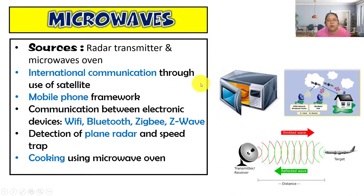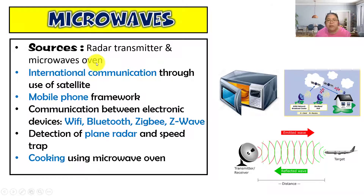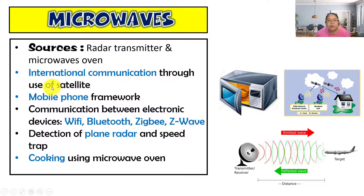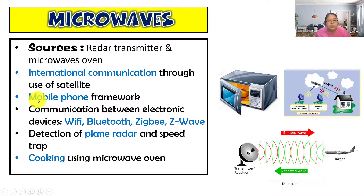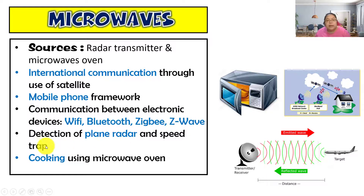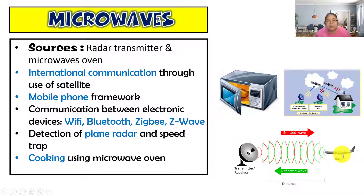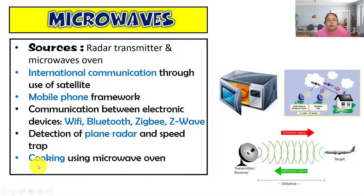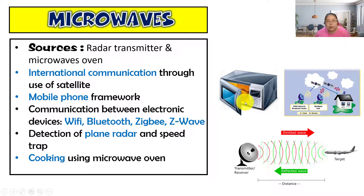Next is microwave. Sources include router transmitters and microwave ovens. Applications include international communication through satellites — normally satellites use microwave. It's also used for mobile communication, and for communication between electronics like Wi-Fi, Bluetooth, ZigBee, and Z-wave. Additionally, it's used for detection of planes via radar and speed tracking. If a question mentions radar systems for airplanes, the answer is microwave. The last application is microwave cooking using the microwave oven.